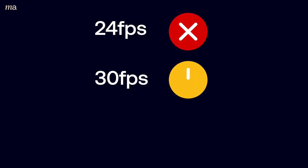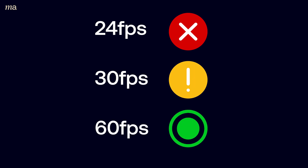24 frames per second will start to look a little bit iffy when you get slower. 30 frames per second is a bit better, but if you can shoot at 60 frames per second, it'll ensure that when you get into those slower sections, everything's going to still look buttery smooth.